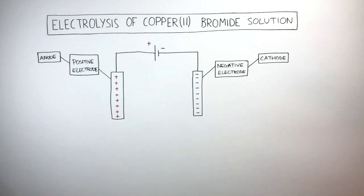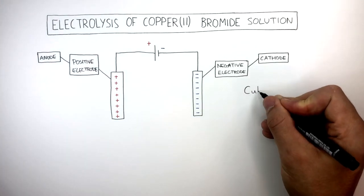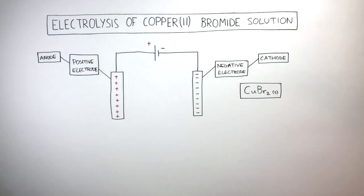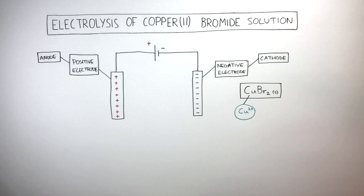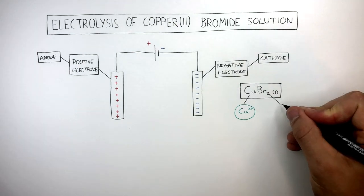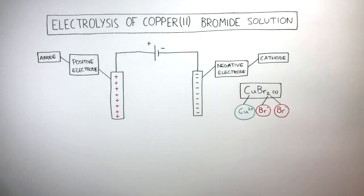Copper(II) bromide has a chemical formula of CuBr₂. It consists of one Cu²⁺ ion and two bromide 1⁻ ions.